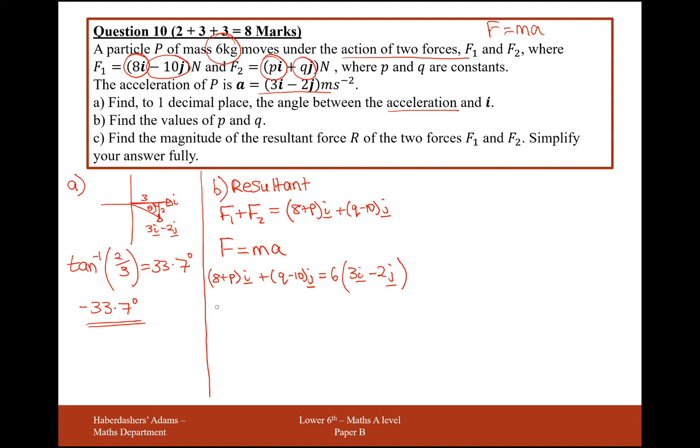Okay, so what I'm going to look at now is the I components and work out what P is. So 8 plus P on the left must match up with 18 on the right. So that must mean that P is 10. And looking at the J components on the left and right, that must mean that Q minus 10 must match up with minus 12. So P must be, so Q rather, Q must be minus 2. Excellent.